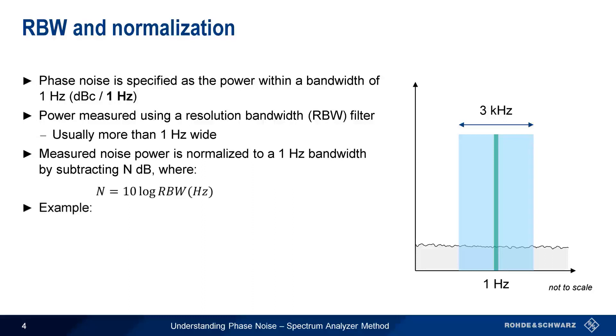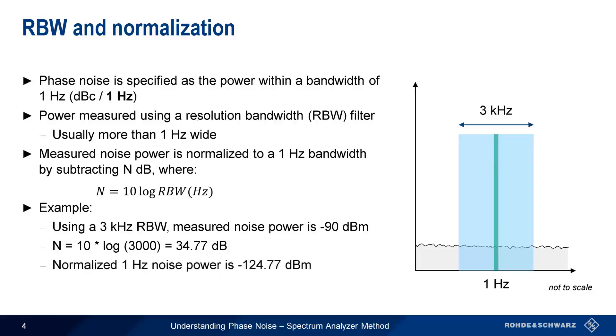For example, using a 3 kHz resolution bandwidth filter, we measure a noise power of -90 dBm. Applying our normalization formula, we get N equals 34.77 dB, so the normalized 1 Hz noise power is -124.77 dBm.